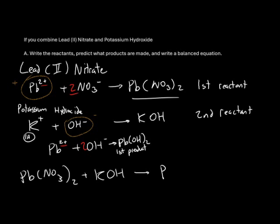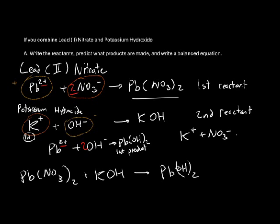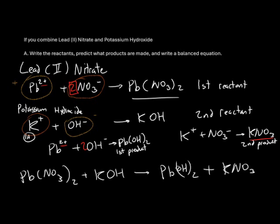We'll write that below on the right side of the arrow. We'll also take the positive part from potassium hydroxide with the negative part from lead nitrate. We'll write K plus and NO3 minus. If we put these together, we can see the charges are exact opposites, giving us KNO3 for our second product. Note that even though we had two pieces of NO3 when we made our first reactant, that is not carried over to our second product — we're only paying attention to the charges right now. Therefore, we're going to write KNO3 as our second product.